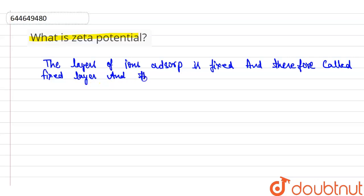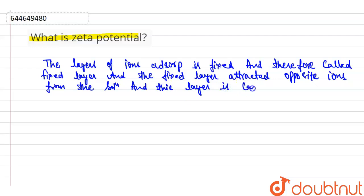The fixed layer attracts opposite ions from the solution, and this layer is called diffusion layer.